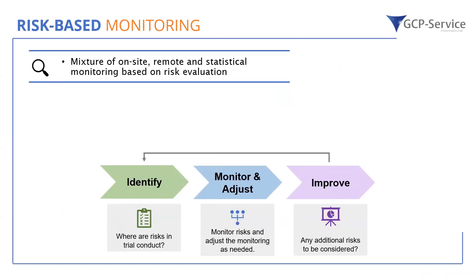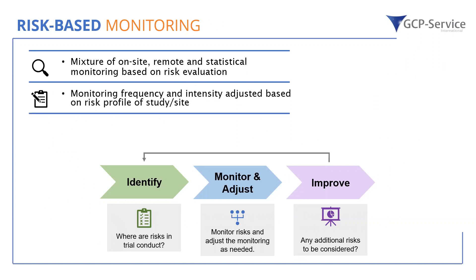Risk-based monitoring uses a mixture of on-site, remote, and statistical monitoring, and basically finds a rationale for which parts should be used at what intensity and frequency by using risk evaluations. These risk evaluations guide the decision on the intensity of individual parts of monitoring. It starts by identifying risks in the trial conduct or with the data being assessed. Then these risks are monitored, and the intensity and frequency of monitoring is adjusted as needed — a continuous process repeated over and over again.